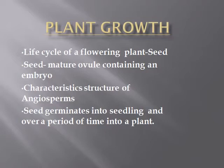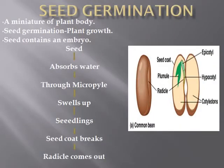This seed germinates into a seedling and over a period of time grows into a big plant. A seed is a miniature of a plant body — to grow a plant, the base is the seed. The plant grows only when there is a seed, because the seed has an embryo which becomes active under favorable circumstances. The seed germinates by first absorbing water through the micropyle region; as it absorbs water it swells up, the embryo becomes active, it pushes the seed coat outward, and the seed coat breaks, then the radicle comes out.